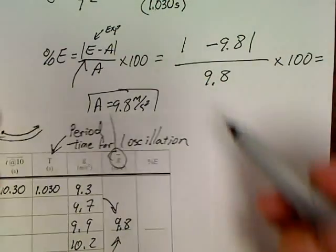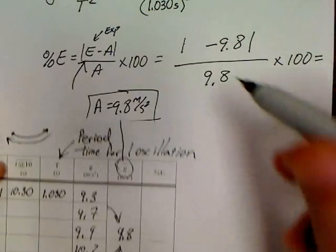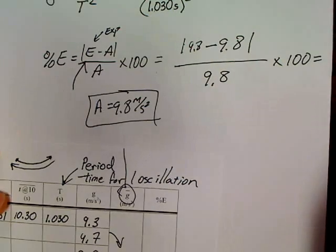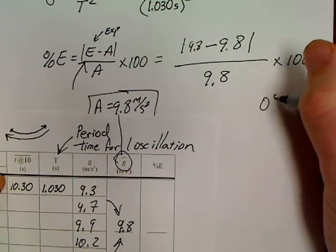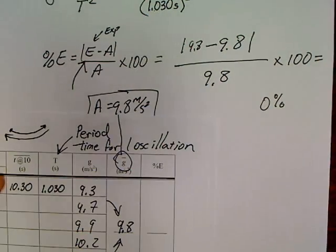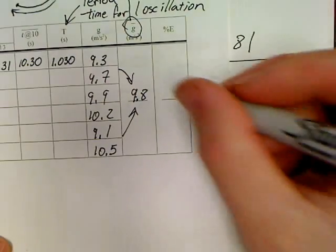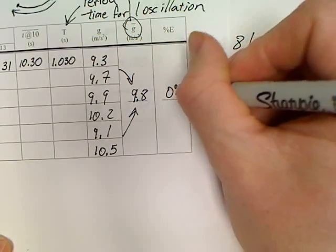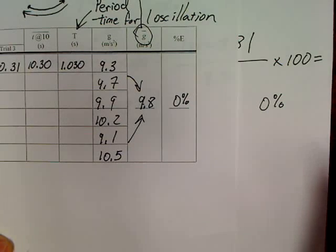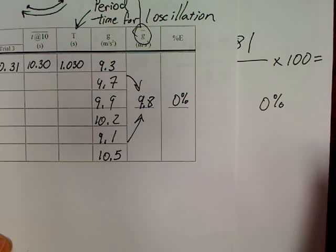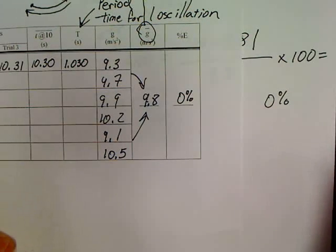Now, because I'm so good at making numbers, mine's actually 9.8 minus 9.8, which is 0%. So, for my lab, my percent error is a whopping 0%. I refuse to make mistakes. Ha, ha, ha, at least on video.